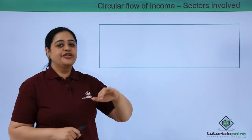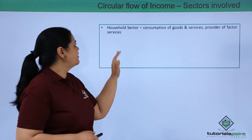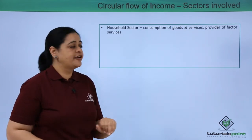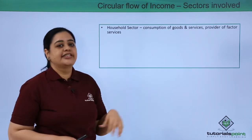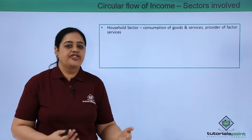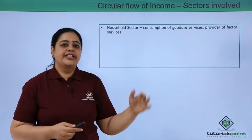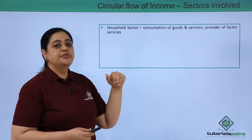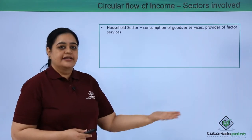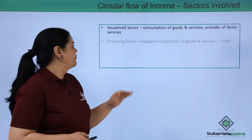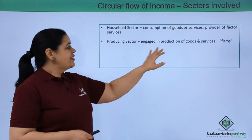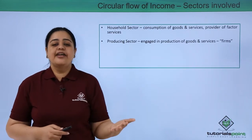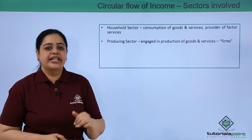Let us understand the sectors involved in the circular flow of income. The first is the household sector — these are the consumers of goods and services which are produced in an economy. They are also providers of factor services; they work in the factory, in the offices. People like you and me who consume goods and services and also provide factor services to the producers. Then comes the producing sector — these are the firms engaged in the production of goods and services to be consumed in the economy.